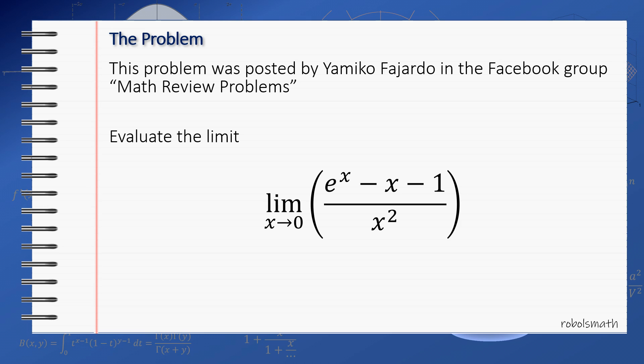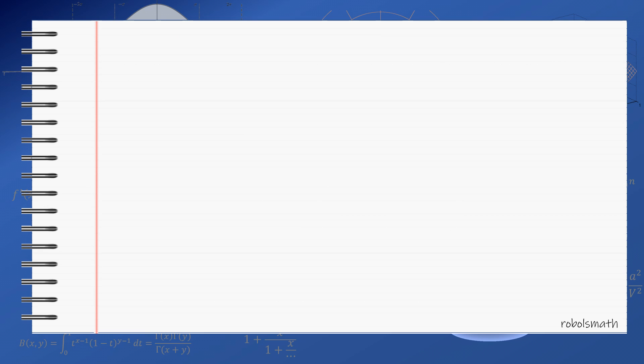This problem was posted by Yamiki Fajardo in a Facebook group I am part of. As a challenge, he further asks not to use L'Hôpital's rule or series expansion to evaluate the limit. First things first, we first have to try to evaluate the expression at x equals 0. Clearly, the numerator and the denominator both tend to 0, making the limit of the form 0 over 0. So just by substituting, we cannot get the limit of this expression.